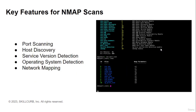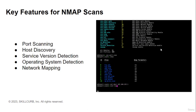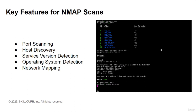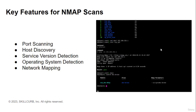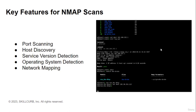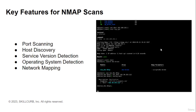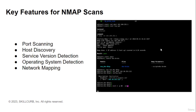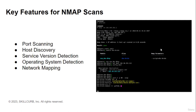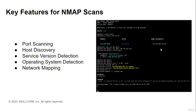Here are some key features of Nmap scans. First, port scanning determines open ports on target systems and identifies services running on specific ports. Second, host discovery detects active hosts on a network. Third, service version detection identifies the specific version and type of services running on target hosts. Fourth, operating system detection determines the OS running on target hosts. And fifth, network mapping creates a visual representation of network topology and helps identify potential vulnerabilities.